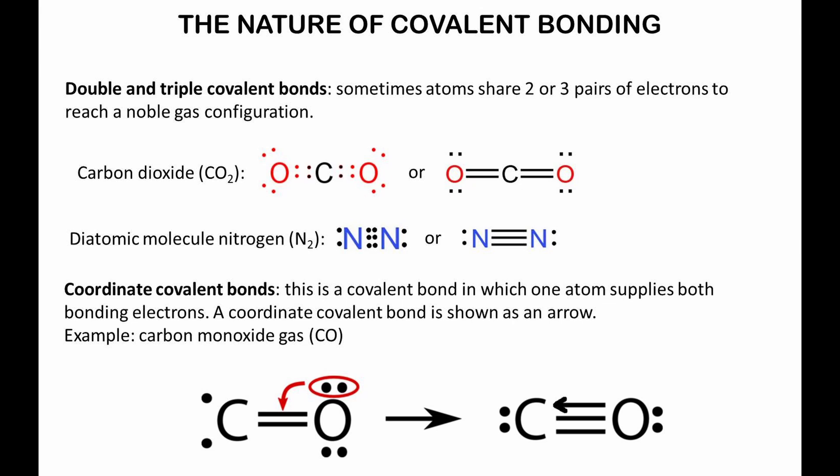The oxygen atom needs two electrons. The two atoms can share two pairs of electrons to form a double covalent bond, so oxygen is stable but carbon not yet. To solve the problem, oxygen can donate one of its unshared pairs of electrons to form a third bond as shown. This is a coordinate covalent bond, in which one atom supplies both bonding electrons.